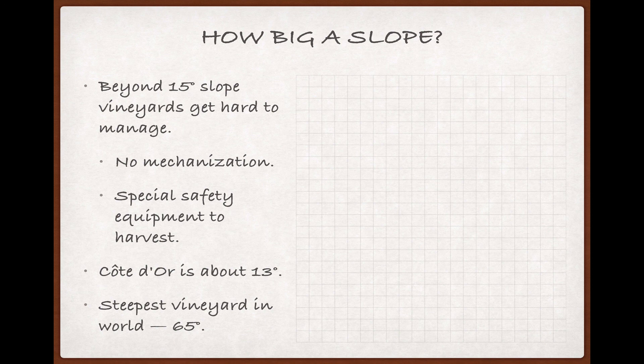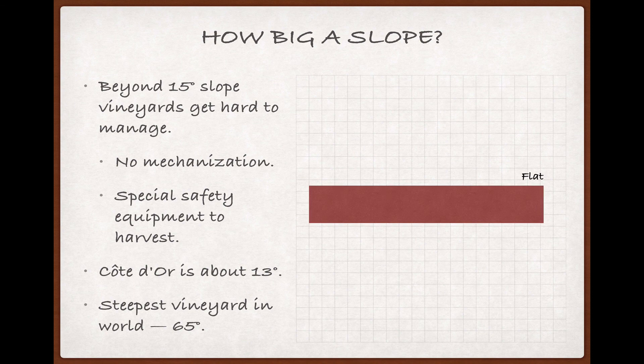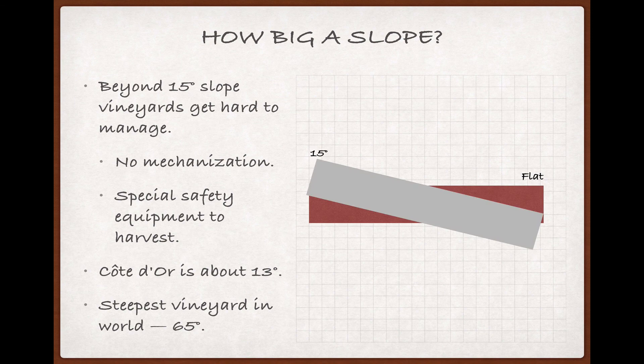I've definitely exaggerated, for both simplicity and effect, the degree of the slope on the slides I've been using in this cast, so here's a more accurate visual of what we're talking about. If we take this burgundy-colored rectangle to represent flat ground, then a 15-degree slope, a little steeper than the Cote d'Or, would look like this.